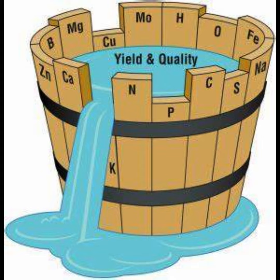Liebig's Law of the Minimum has widespread applications in agriculture, ecology, and environmental science. It has been influential in guiding agricultural practices to ensure that all necessary nutrients are available for crops. Additionally, it is a fundamental concept in ecological studies, helping researchers understand and manage ecosystems by identifying and addressing the factors that most limit the growth of organisms within them.